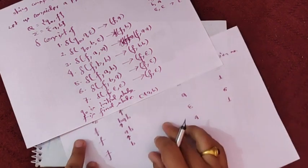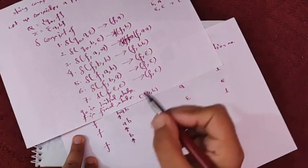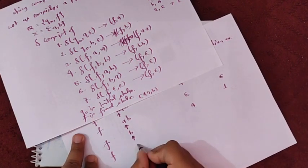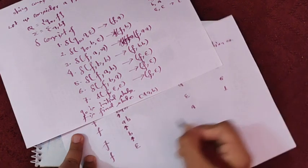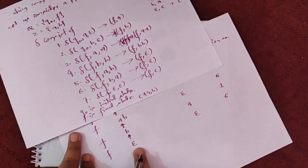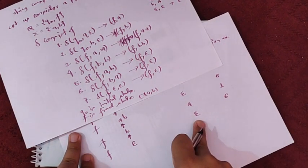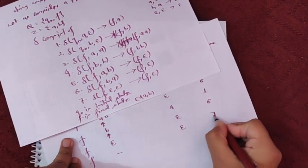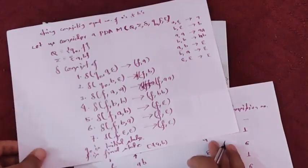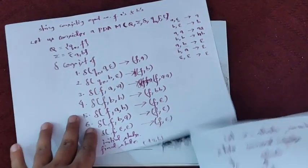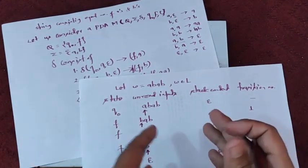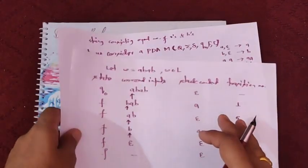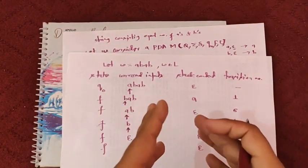B is on the input tape and A is on top of stack — so rule six applies again; the stack becomes empty. Now the input tape is empty and the stack is empty, so we move to the final state. The string is accepted. In this way we have constructed the PDA for strings with equal numbers of A's and B's. In the next video we will be converting a CFG into a PDA. Thank you and bye-bye.